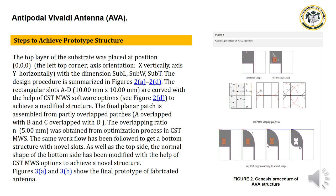The rectangular slots A and D, measuring 110 mm × 10 mm, are curved using the CST MWS software option, as shown in Figure 2D. To achieve and modify the structure, the final planar patch is achieved.